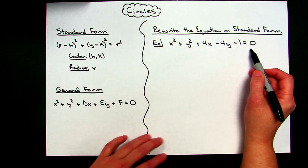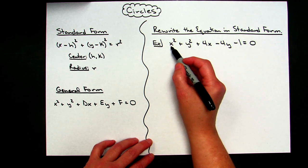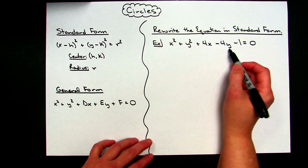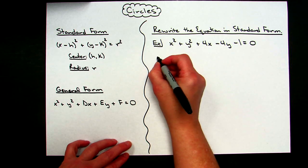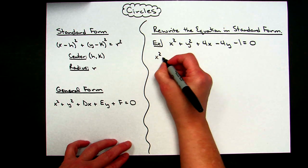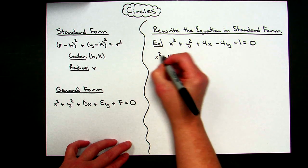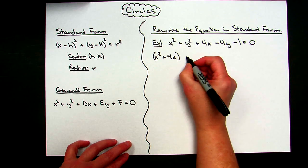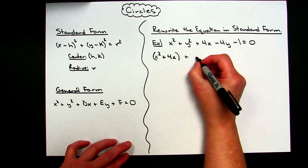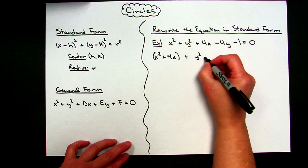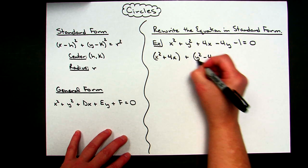My first step is going to be to rearrange my terms so that I have my x terms together and I have my y terms together. So I'm going to do x squared plus 4x, I'll put that in a set of parentheses. Plus, now I'm going to put my y terms together: y squared minus 4y, put that in a set of parentheses.